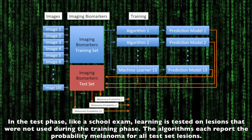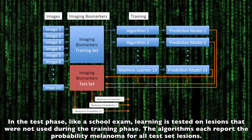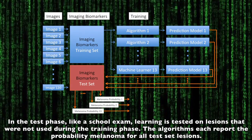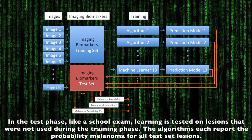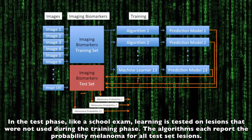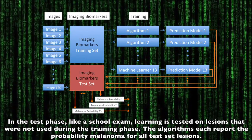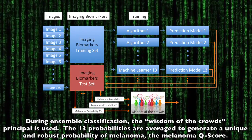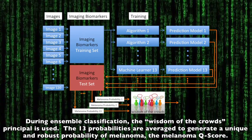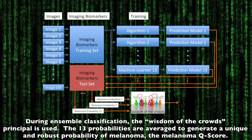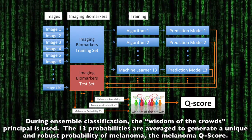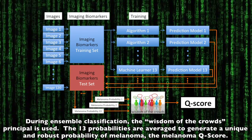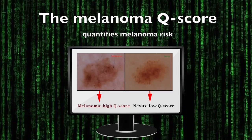In the test phase, like a school exam, learning is tested on lesions that were not used during the training phase. The algorithms each report the probability of melanoma for all test-set lesions. During ensemble classification, the wisdom of the crowds principle is used. The 13 probabilities are averaged to generate a unique and robust probability of melanoma — the melanoma Q-score.